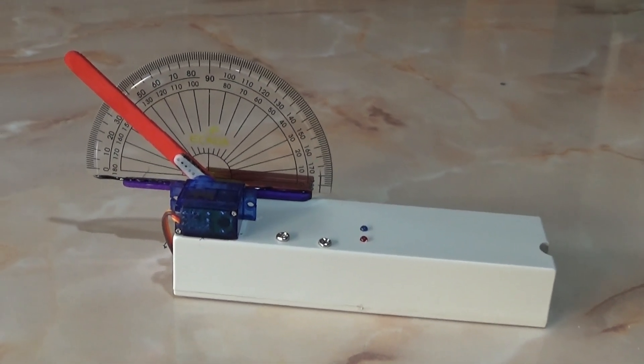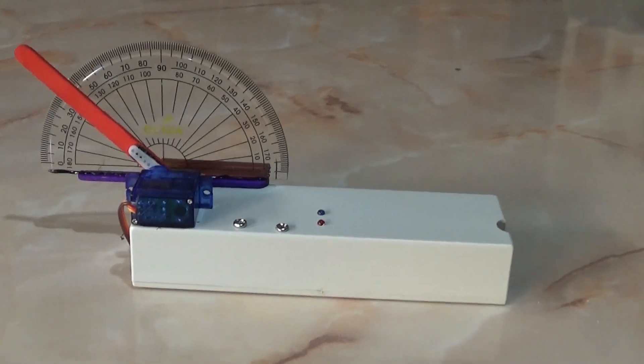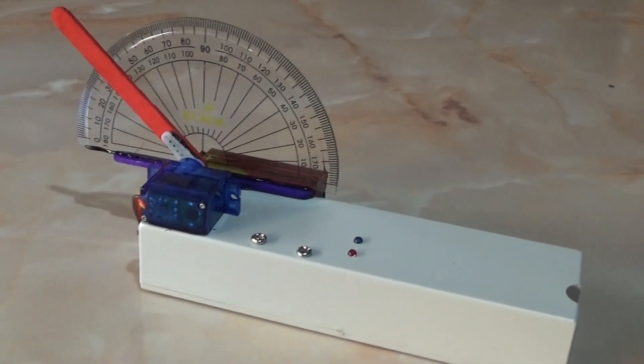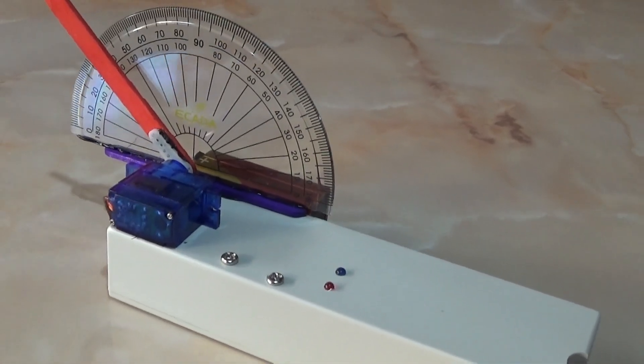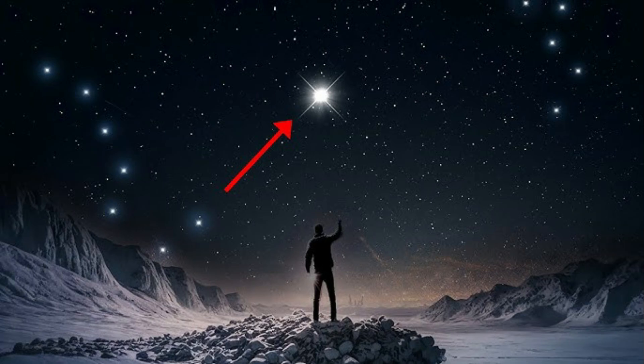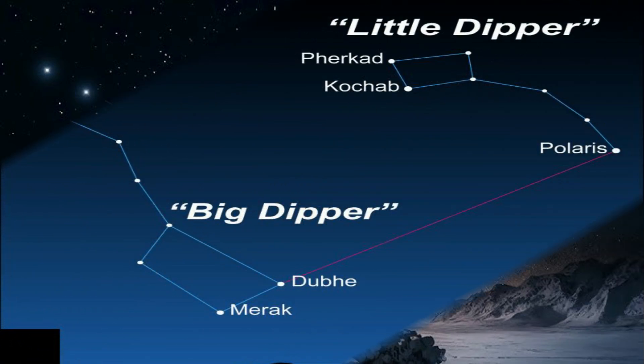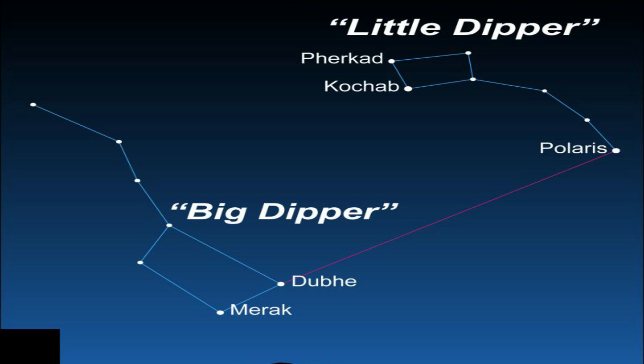Hello, today I present to you the construction of a small astronomical instrument similar to the quadrant used in maritime navigation. This device uses the reverse principle, that is, it indicates the position of the North Star, Polaris, depending on position and latitude.